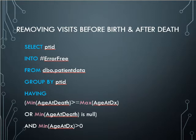Here we're looking at removing visits before birth or after death. What probably happened is that the manual entry of date of birth, date of death, or date of visit was entered in error. The code selects patient ID into a temporary file called 'error_free' from 'patient_data', grouping by patient ID. The HAVING command specifies that the minimum age at death is greater than or equal to the maximum age at diagnosis, or the minimum age at death is null — meaning the patient is still alive — and the minimum age at diagnosis is greater than zero, meaning the patient has been born.